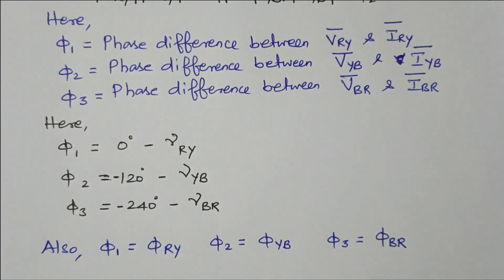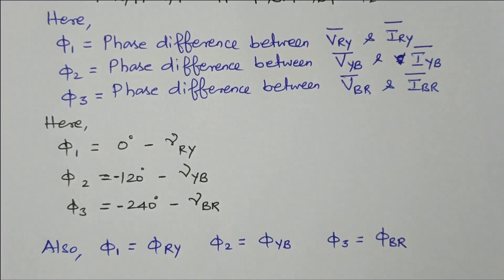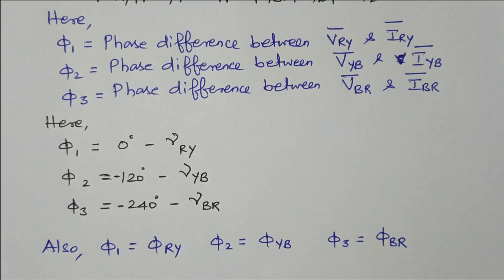In this video we discussed the unbalanced delta connected load. From the diagram we first analyzed the direction of phase voltage, phase current, line voltage, and line current. Then we calculated phase voltage, line voltage, phase current, line current, and finally the power. Three phase angles φ₁, φ₂, φ₃ were evaluated. Subscribe the channel for more videos and notifications. Soft copy of this material is available in the drive; the link is given in the description box. Thank you for listening.